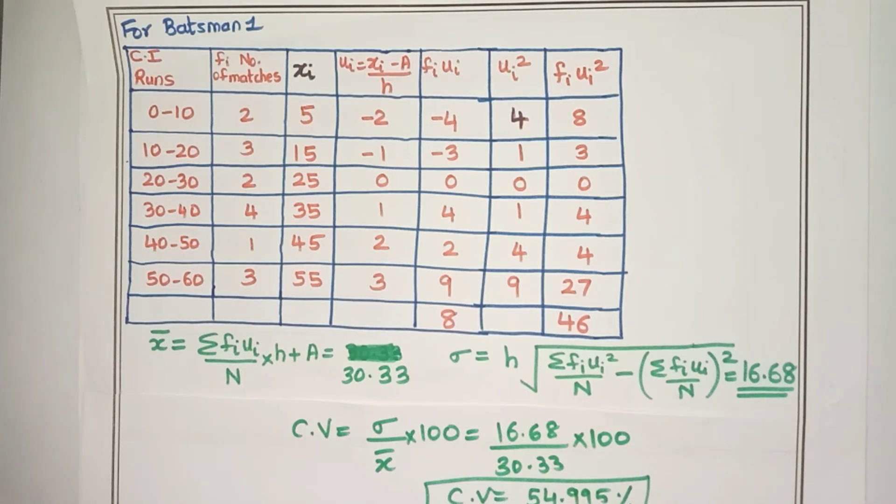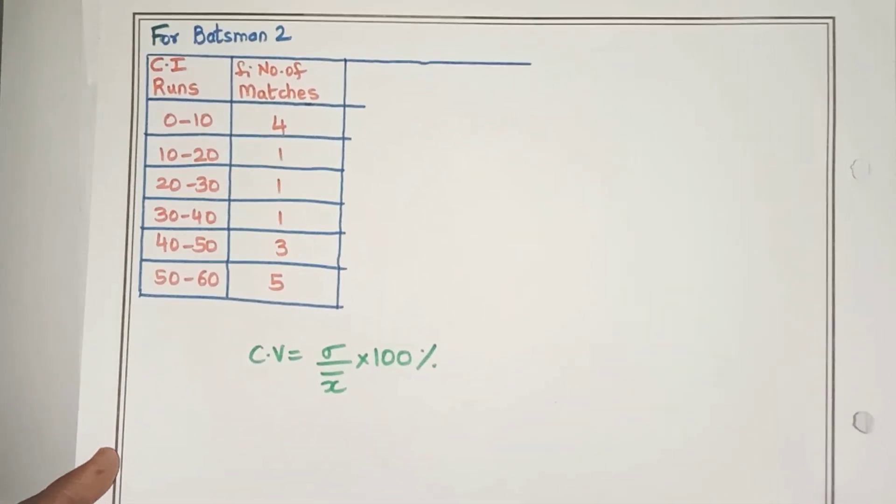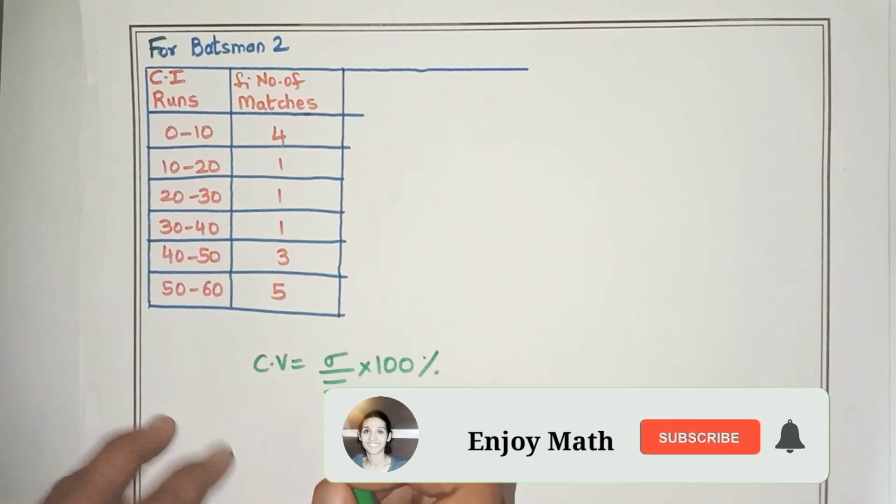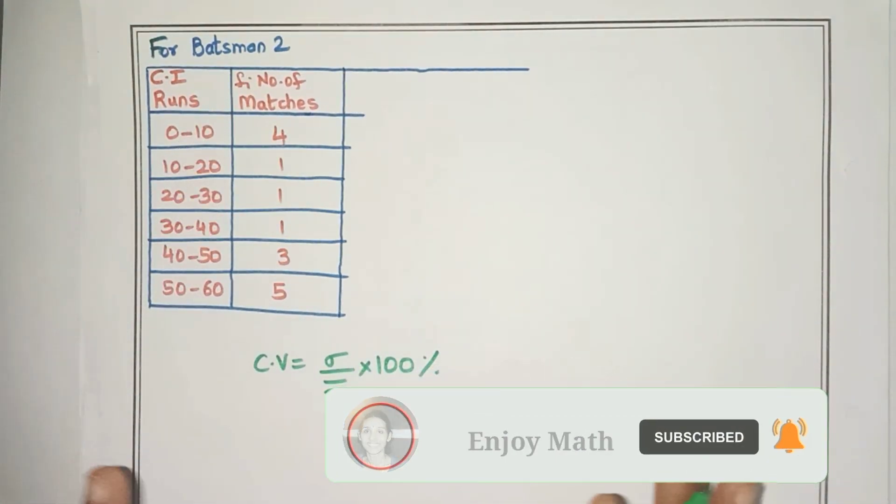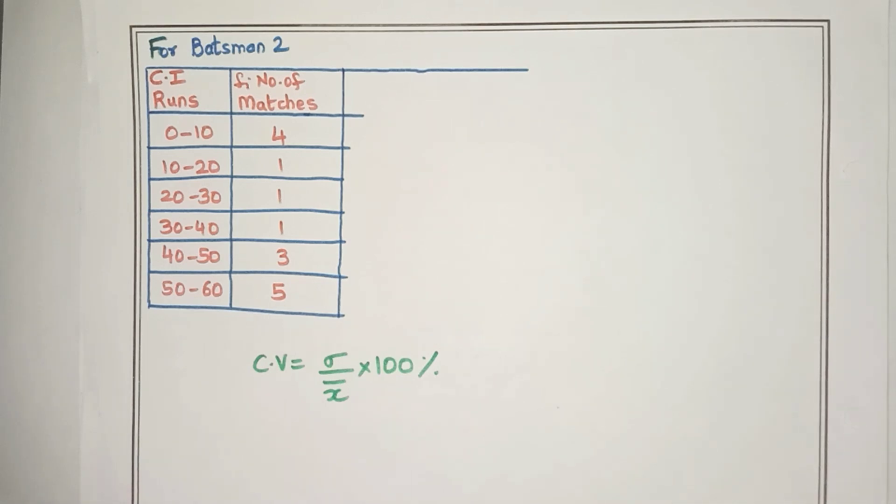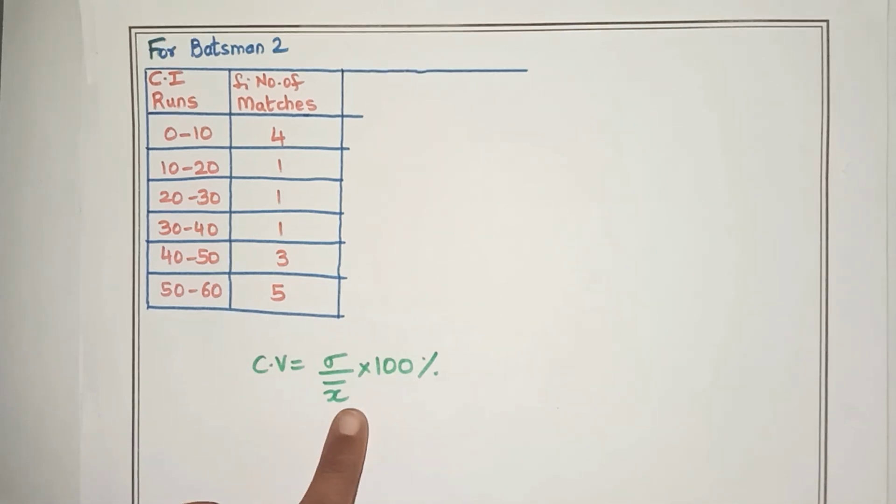Now let's do the same steps for batsman 2. So here we have the data for batsman 2. This is the CI which is the runs and Fi which is the number of matches. Again, we are going to find the standard deviation and the mean. We'll use the step deviation method only.